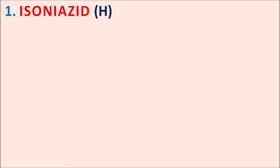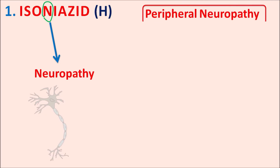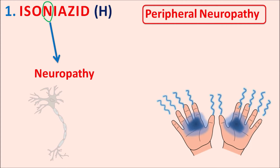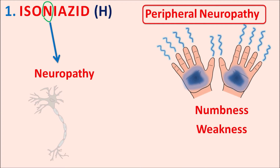The first drug isoniazid, indicated by H (a hydrazide derivative), specifically produces peripheral neuropathy. The letter N within the drug name can be remembered as neuropathy. This causes numbness, loss of sensation, weakness, and pain at the hands and feet. Since the drug is used for longer periods, peripheral neuropathy is common. Slow acetylators have a slower metabolism, resulting in elevated isoniazid levels and more severe peripheral neuropathy.